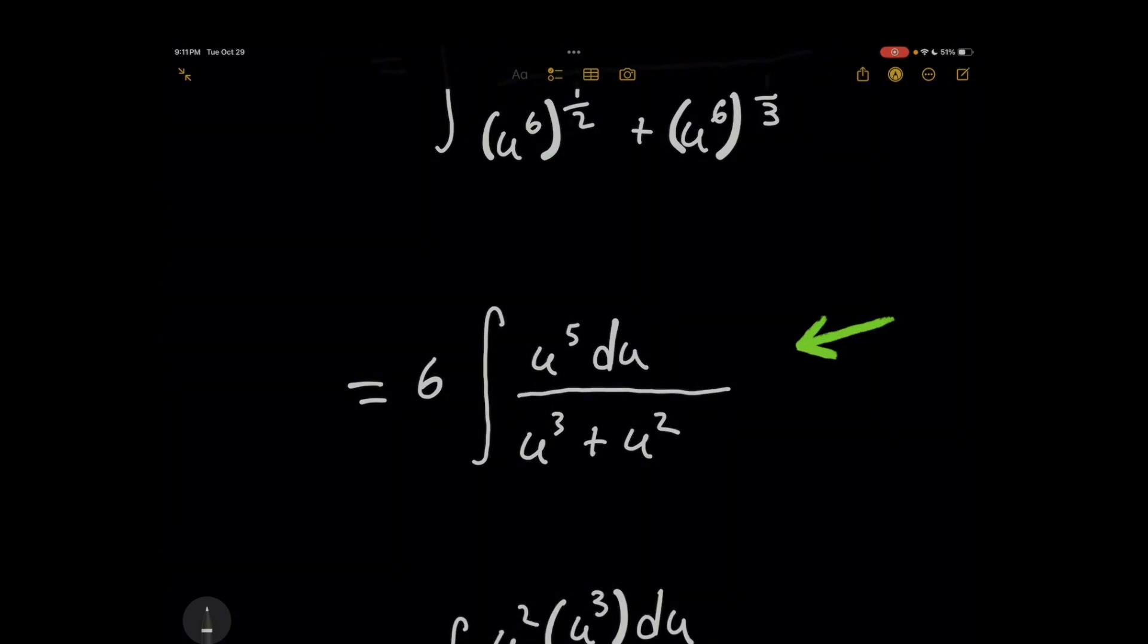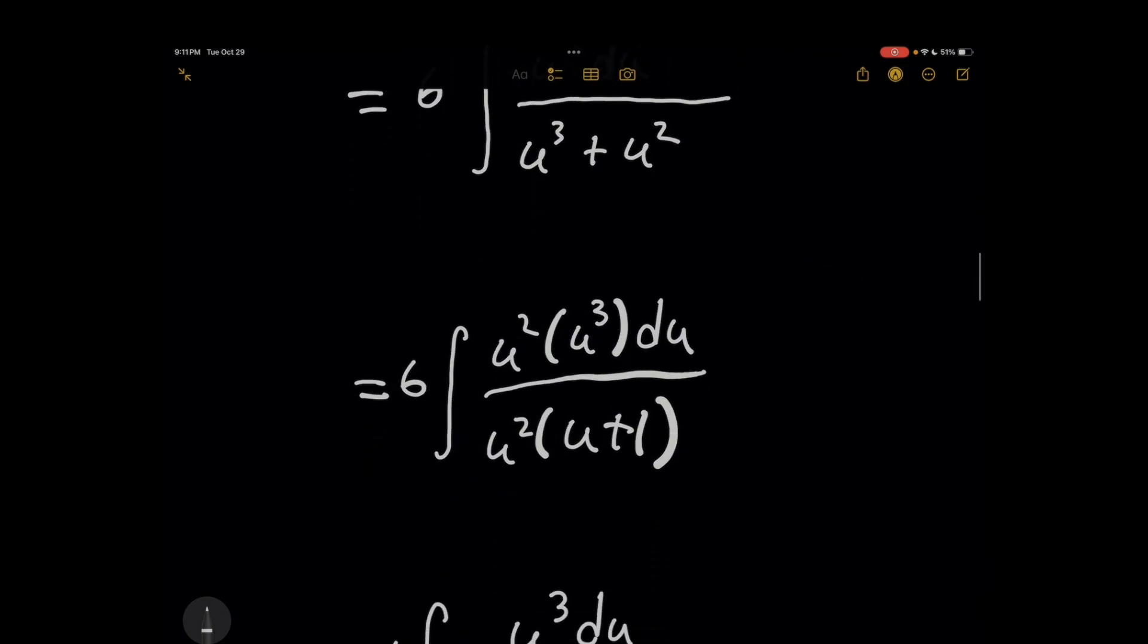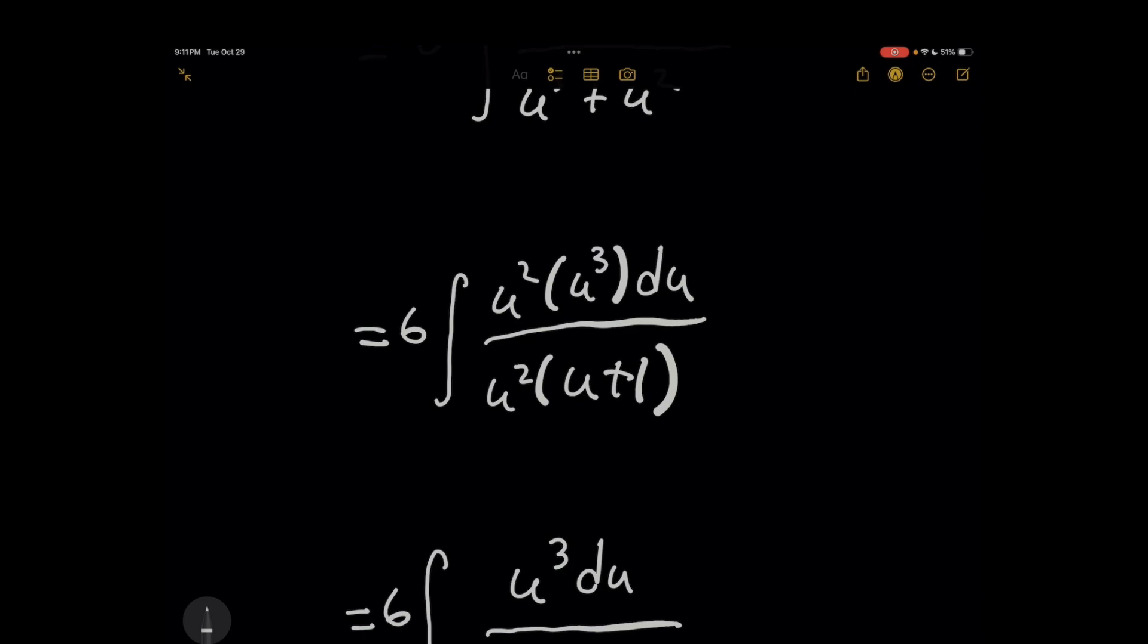And now every term has a u squared factor, so what I'm going to do next is take that factor out on the top and bottom. And when you cancel out the u squared terms, you're going to be left with this expression here.